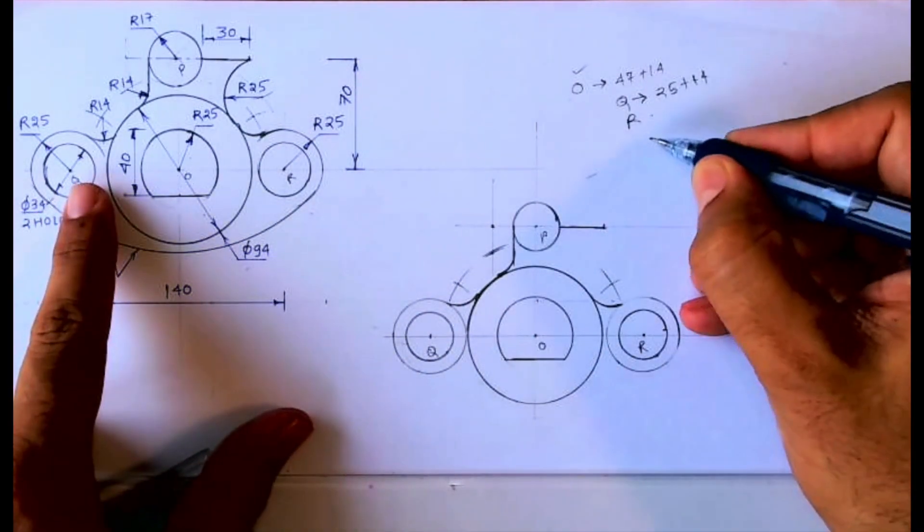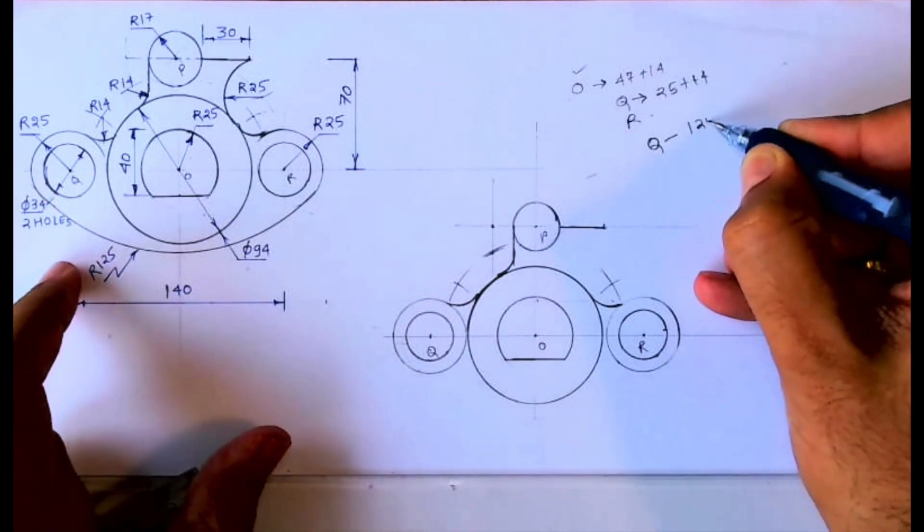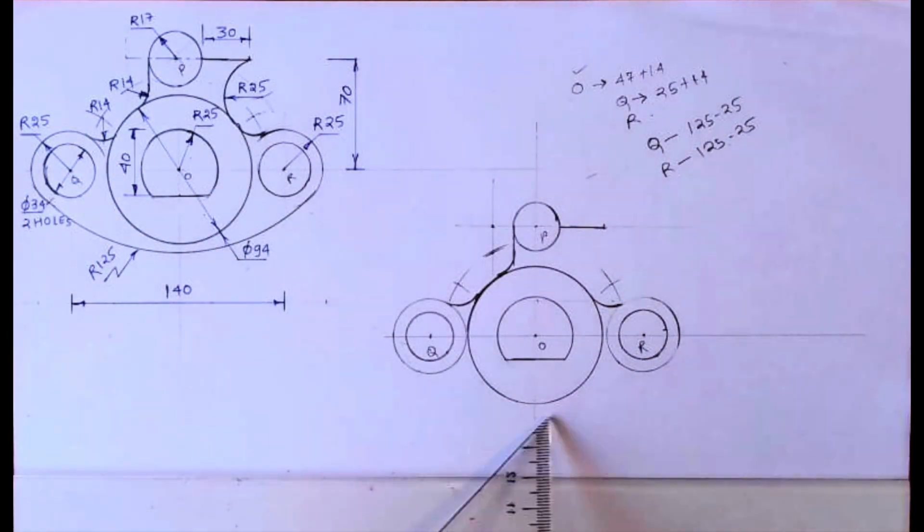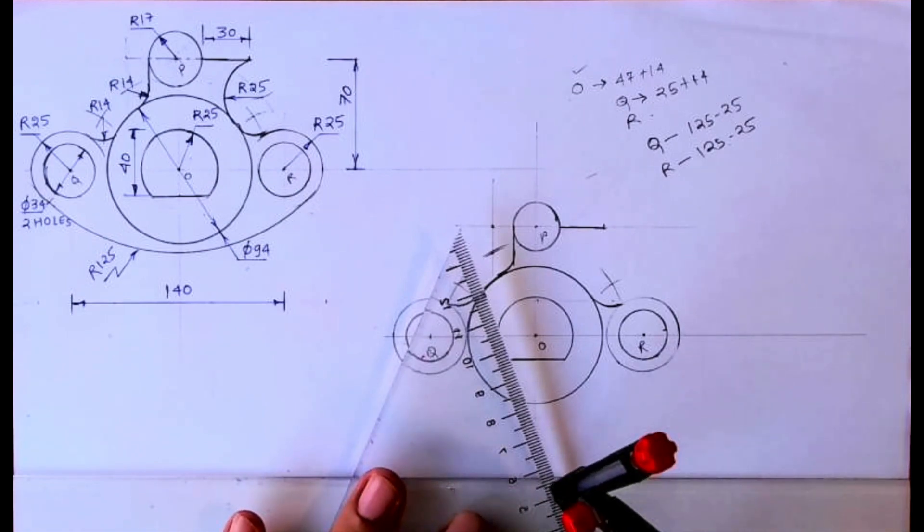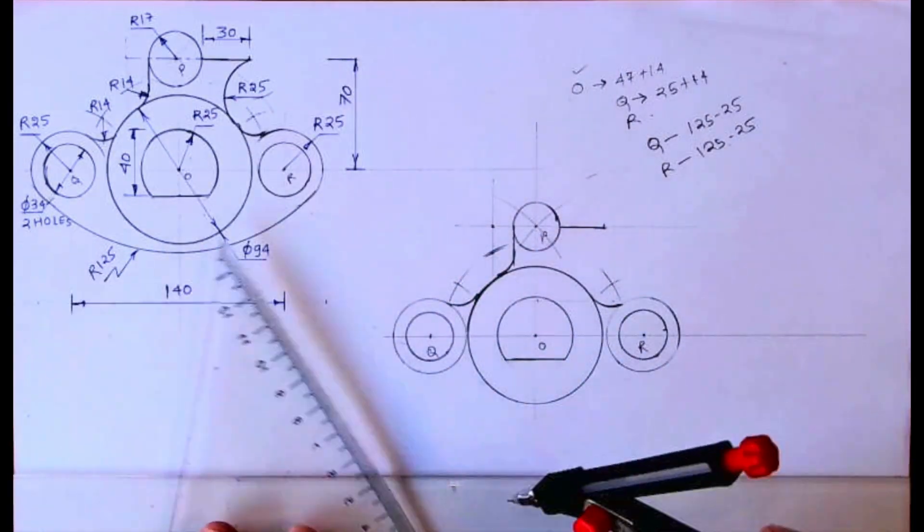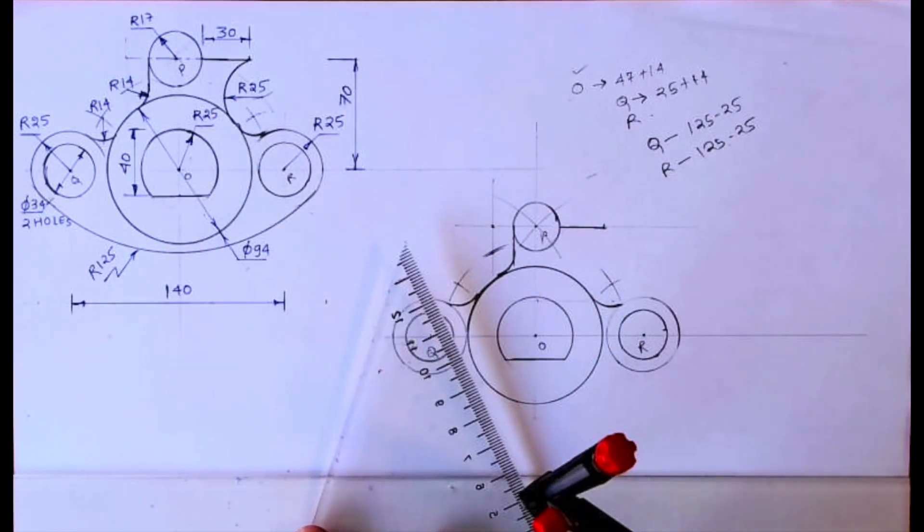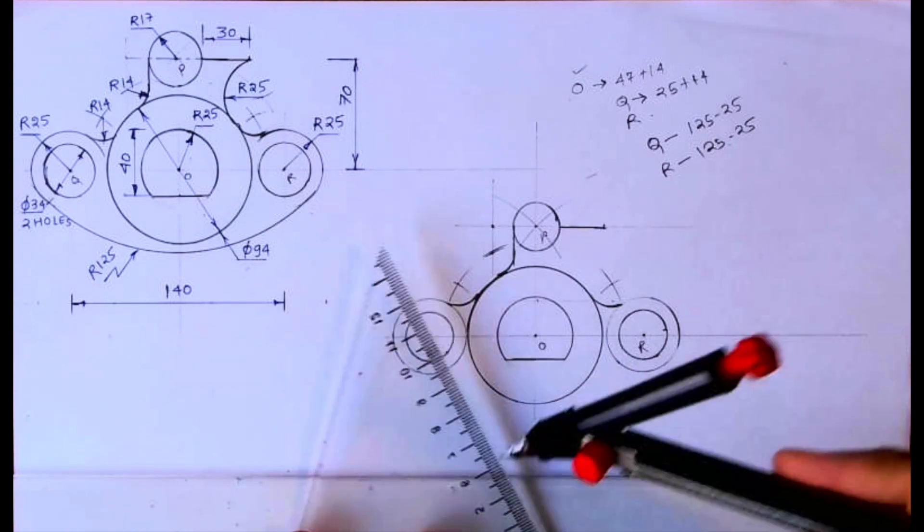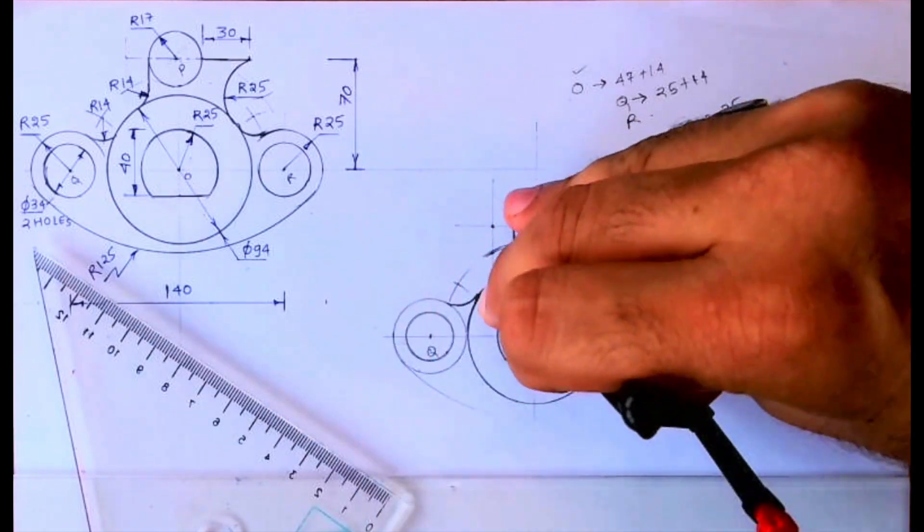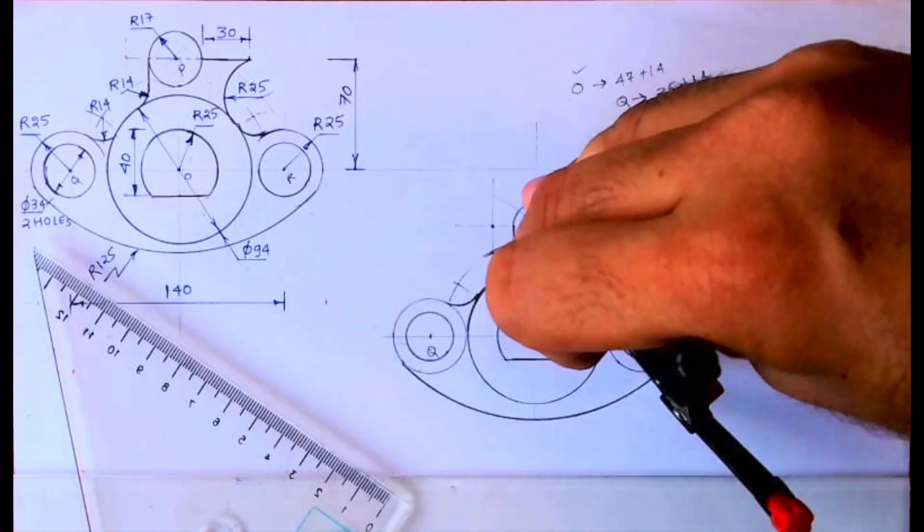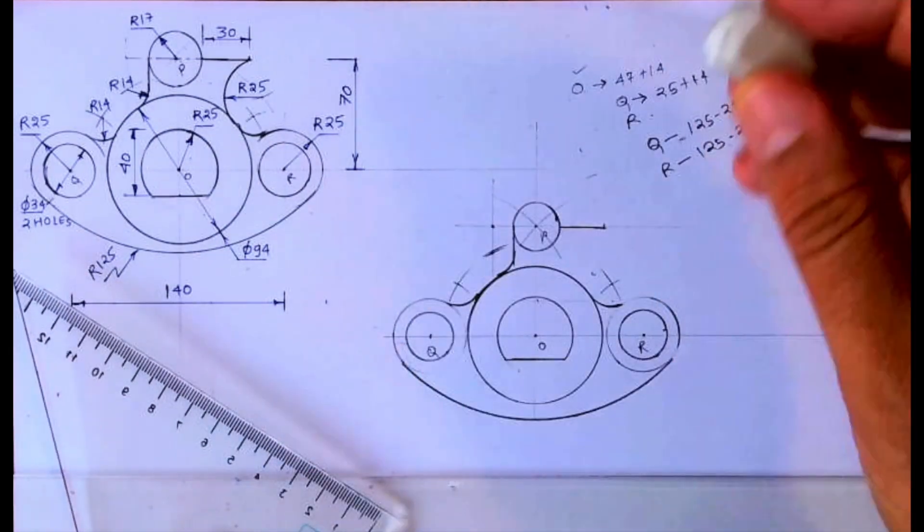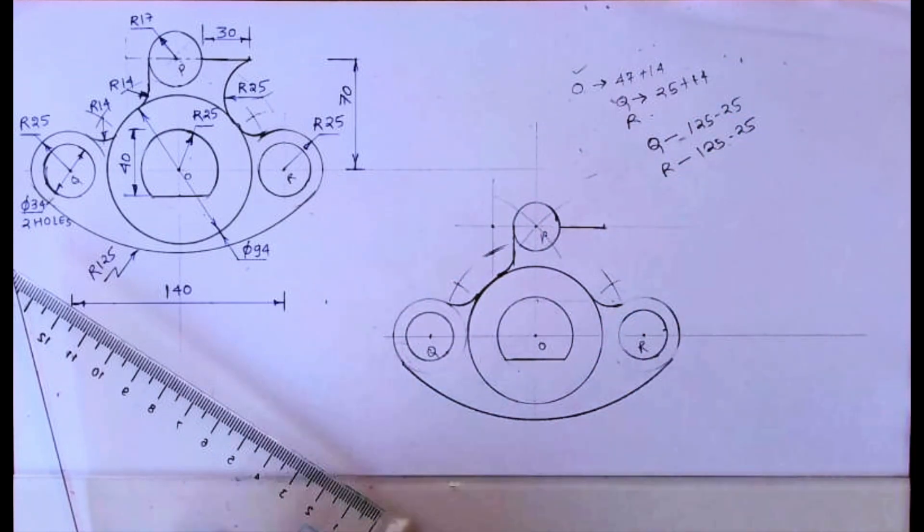Now we need to draw radius 125. So from Q it's internal, so from Q we'll cut 125 minus 25, and from R also 125 minus 25. So we'll cut 100, 100 from Q and R. Wherever it will cut, from that point we'll cut 125. After doing this we can erase those not so required or maybe we can draw it light.